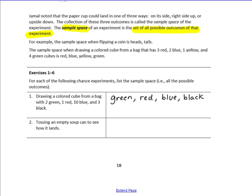A sample space is what could be drawn. Number two: tossing an empty soup can to see how it lands. Just like our paper cup, an empty soup can could land right side up, upside down, or on its side. So there are three outcomes: right side up, upside down, or on its side.